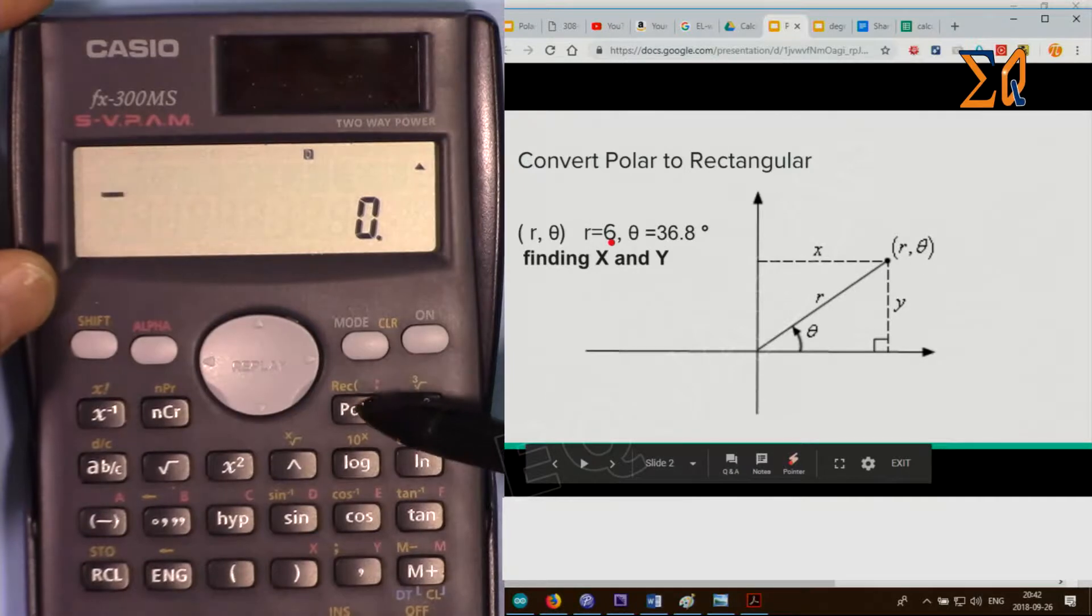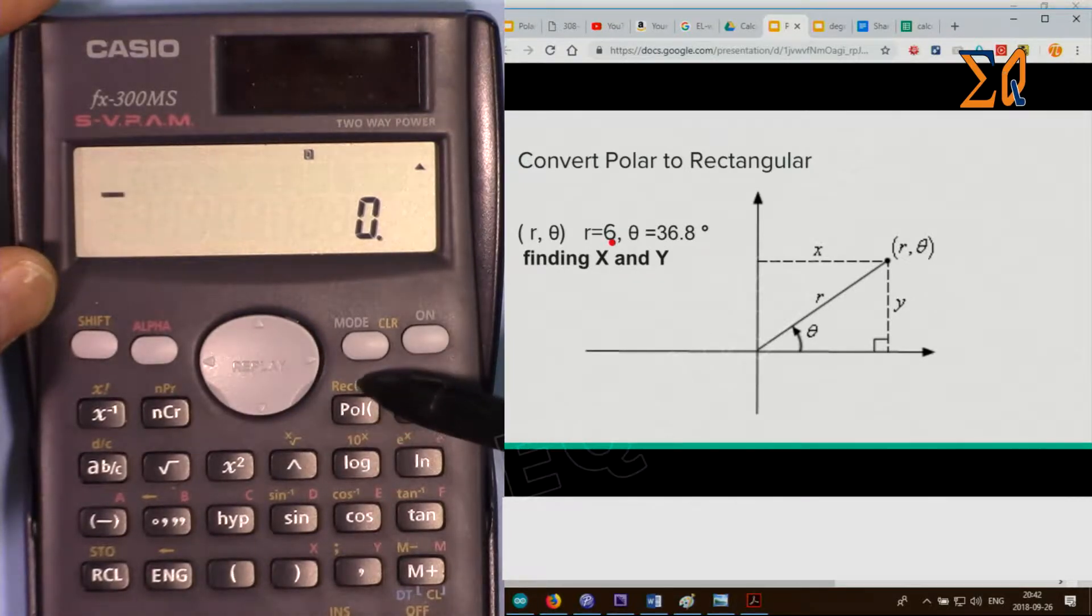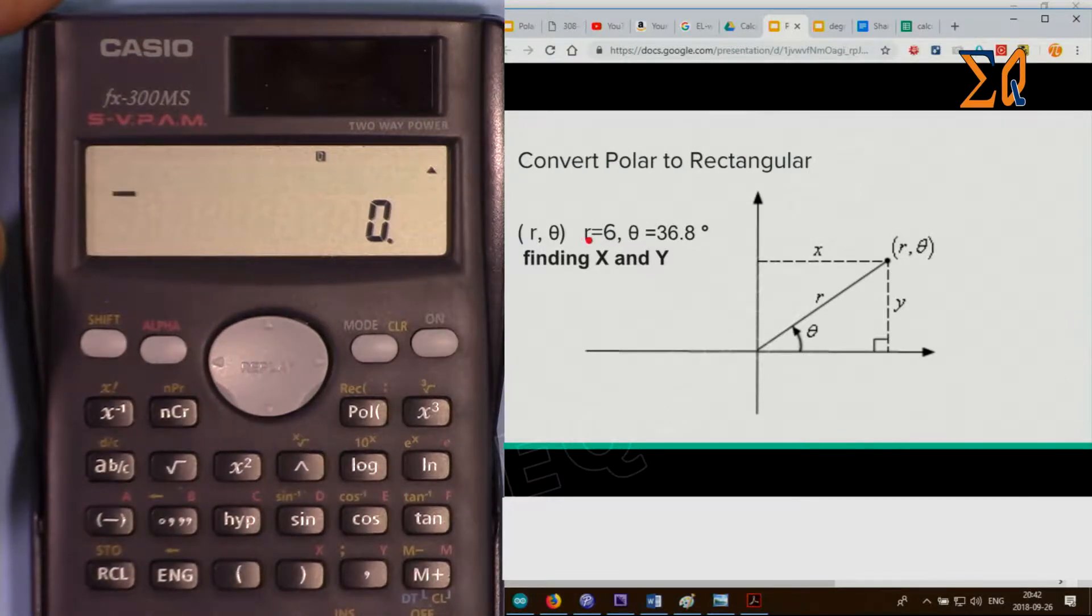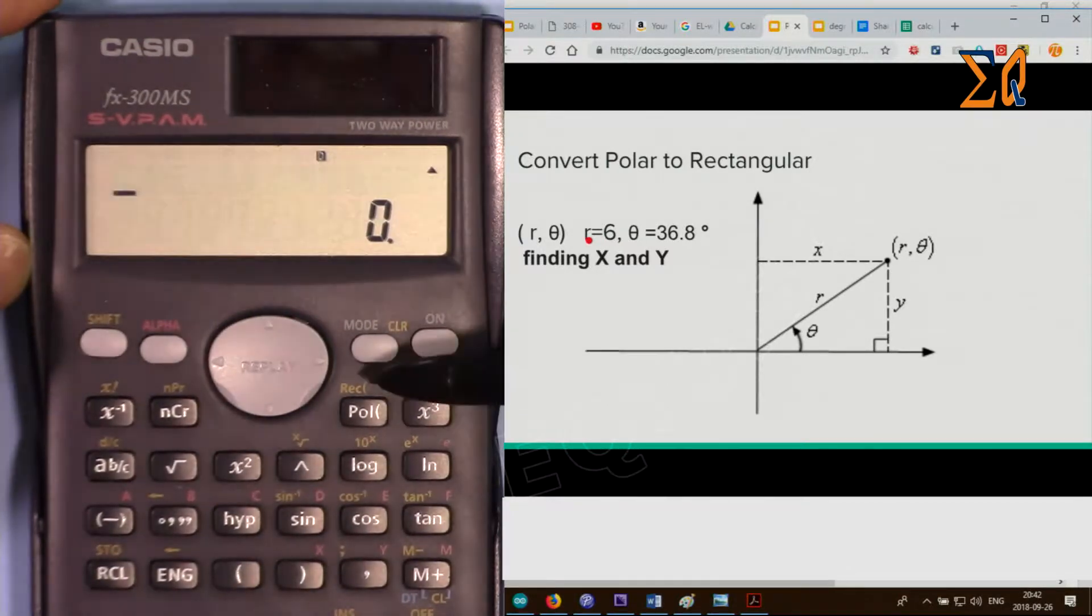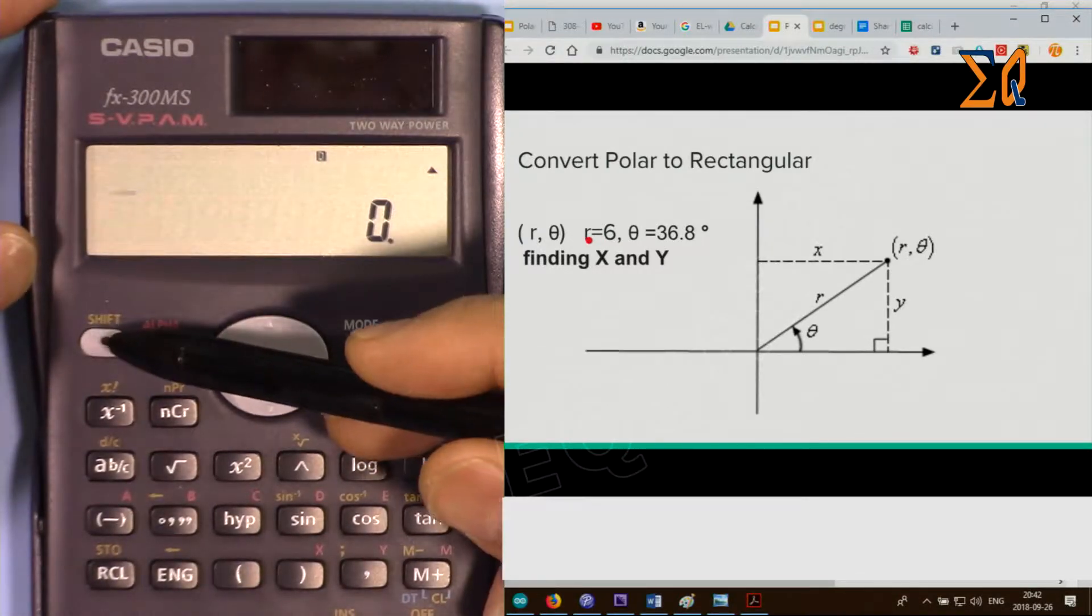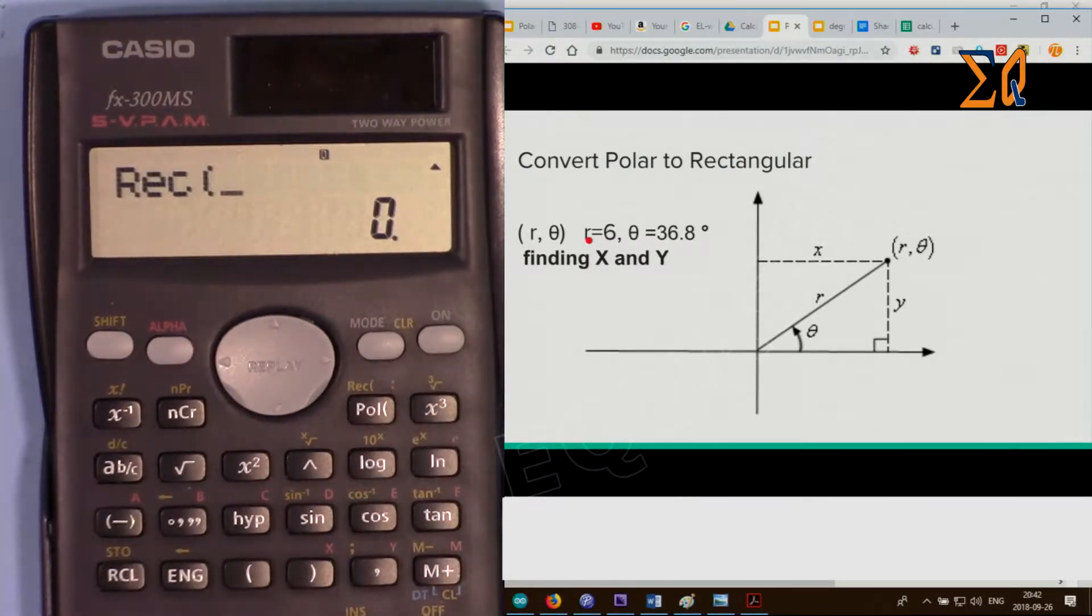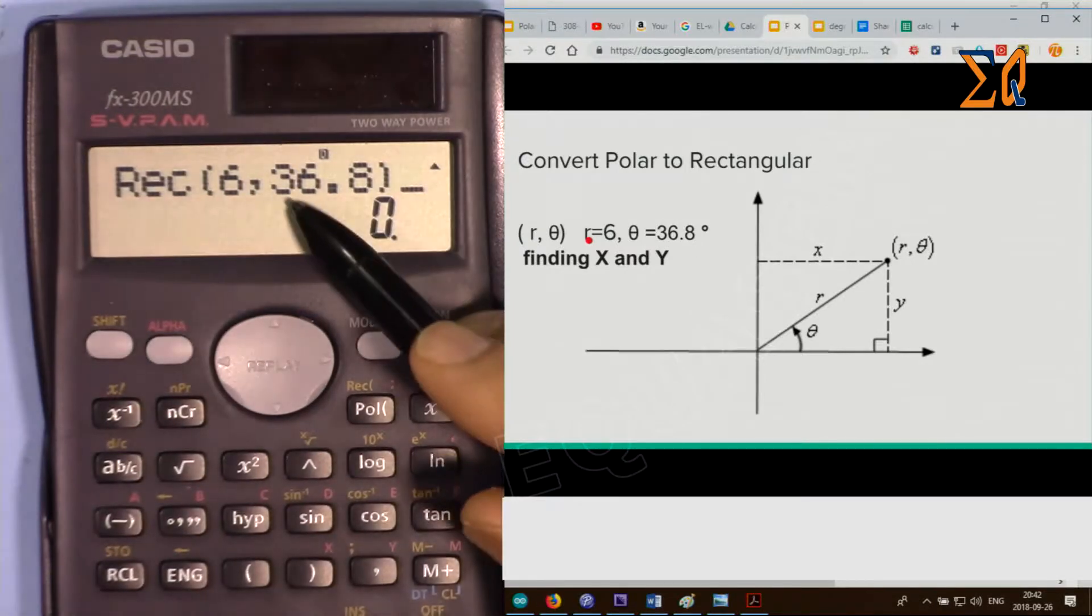To enter this value we need to use this button here, pole and rectangle. The value you select is polar and I want it in rectangle, so I will use rect. I have to press shift, so press shift and rec. Now enter the value 6 and then comma 36.8, then close.